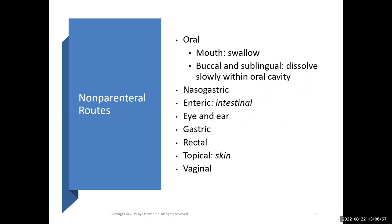Oral route means swallow. Buccal and sublingual means the medication dissolves slowly within the oral cavity — buccal within the cheek, sublingual is under the tongue. Nasogastric is a non-parenteral route because it goes through a tube placed from the nose into the stomach, bypassing swallowing but going into the stomach where absorption occurs. Enteric simply means a tablet has a special coating to keep it from dissolving in the stomach; instead, it passes through and dissolves in the small intestine. Eye and ear drops are also considered non-parenteral.